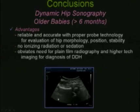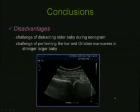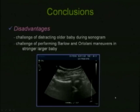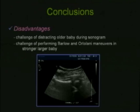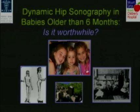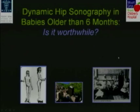The conclusion was that the 9-4 probe is preferable for evaluating hips in larger babies over six months, providing reliable and accurate information on hip morphology, position, and stability without exposing babies to ionizing radiation or sedation, thus obviating the need for plain film radiography for DDH diagnosis. The challenges include distracting an older baby — feeding, singing, dancing, showing videos — and performing Barlow and Ortolani maneuvers in the stronger, larger babies. Dynamic hip sonography in babies older than six months is worthwhile.